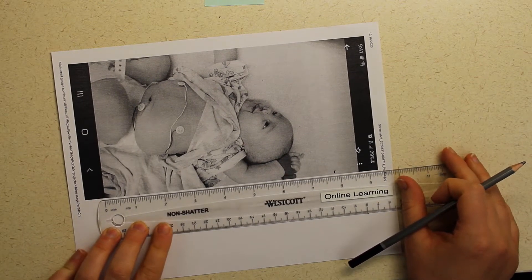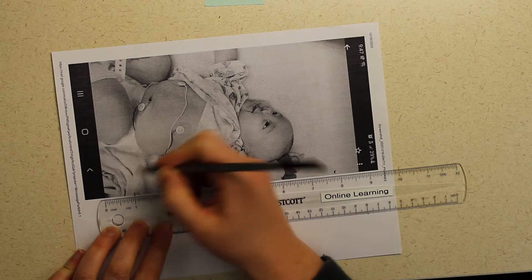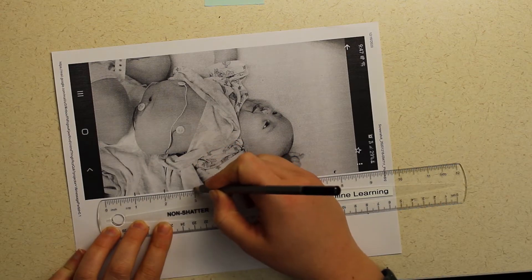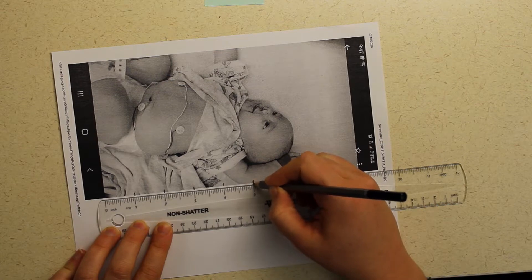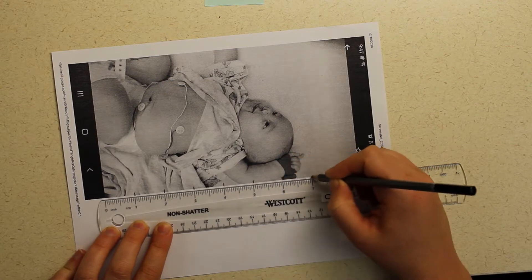So as you may have expected, the first step of doing the grid method is to draw a grid. You measure boxes.